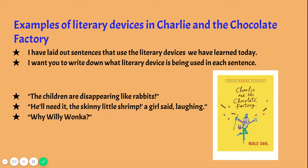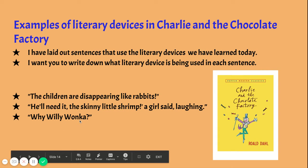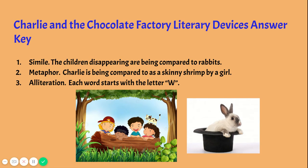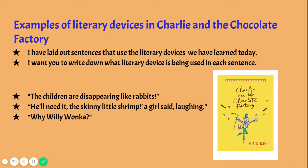Now we're going to do the same thing but with the book Charlie and the Chocolate Factory. I've laid out three sentences that use literary devices we've learned today. Pause once I read these sentences and figure out what device is being used. The first sentence is: 'The children are disappearing like rabbits.' The second is: 'He'll need it, the skinny little shrimp, a girl said laughing.' The third is: 'Why, Willy Wonka?' Pause and go over your answers.